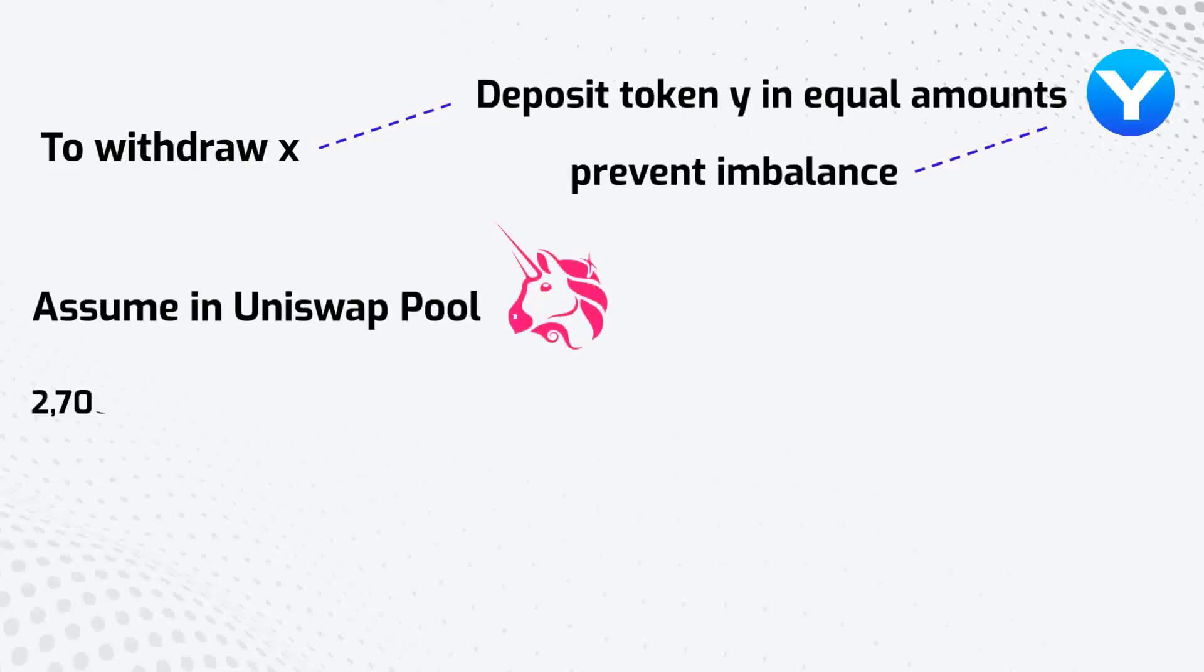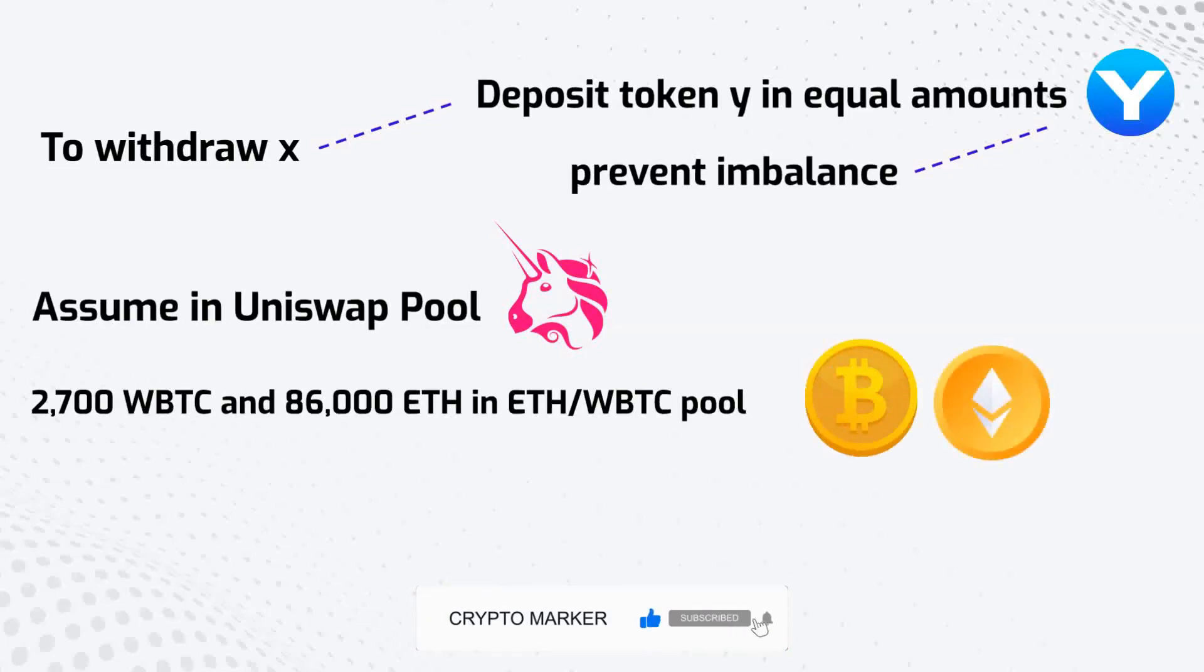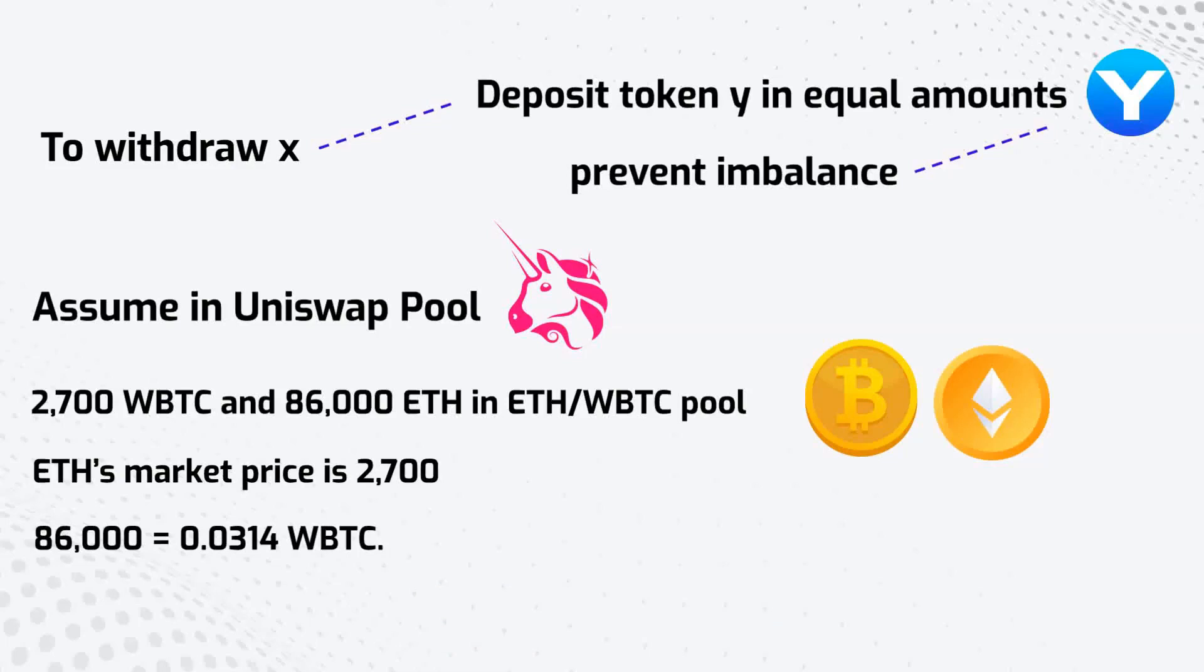Let's assume that there are 2,700 WBTC and 86,000 Ethereum in Uniswap's Ethereum and WBTC pool. This reserve ratio implies that Ethereum's market price is 0.0314 WBTC. The market price only moves as the reserve ratio of the tokens in the pool changes, which happens when someone trades against it.